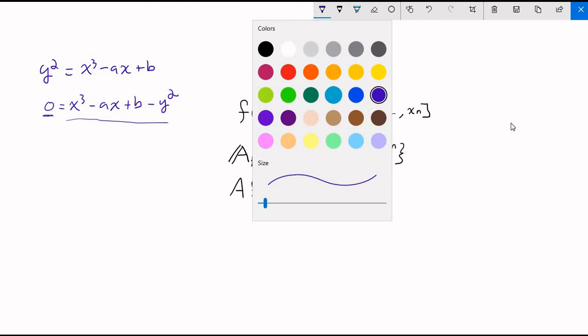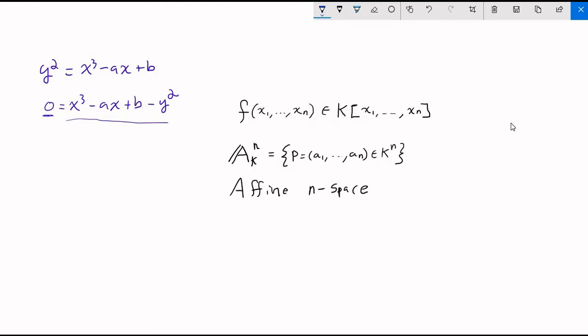So towards that end, we may as well develop some notation for talking about this in a concise way. In our affine n-space, we're going to define these sets z of f. These are going to be the points of affine n-space which our polynomial vanishes on.